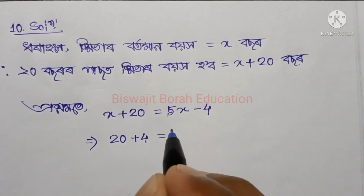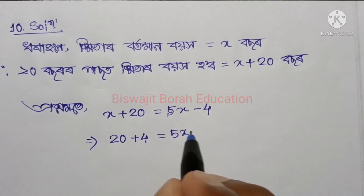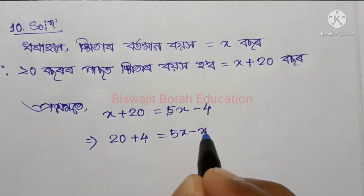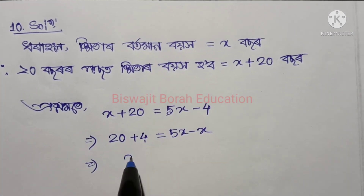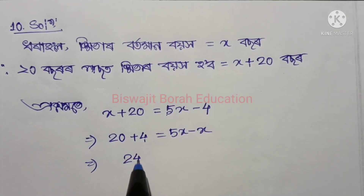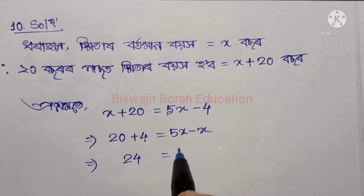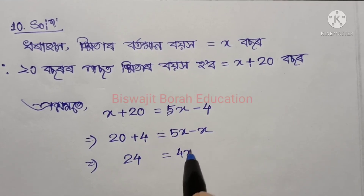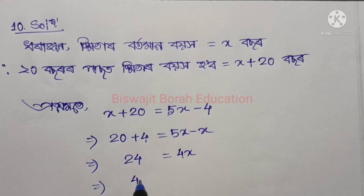Plus 4 is equal to 5x, and 2x is equal to minus x. So b is equal to 24. Then 24 equals 5x equals 4x. So this is 4x equals 24.